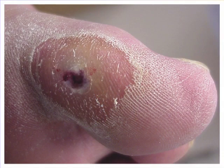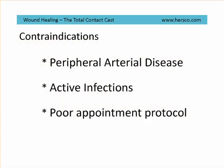Some wounds can close in as little as four to five weeks. There are contraindications for the total contact cast. Among them are patients with peripheral arterial disease, patients with active infections, and also you need to watch out for those patients who don't follow their appointment protocol. It would be a disaster to apply a total contact cast and then have the patient miss a series of the weekly reappointments.